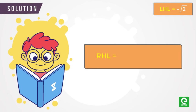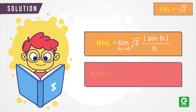So right-hand limit is equal to limit h approaching 0: √2 |sin(h)| / h, which is equal to limit h approaching 0: √2 sin(h) / h, which is equal to √2.